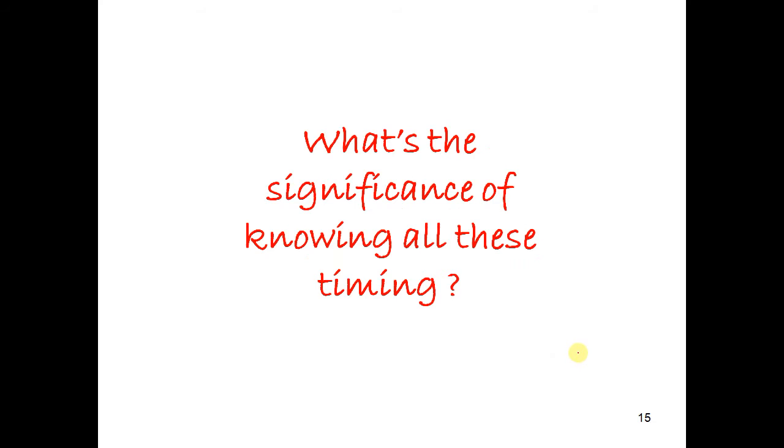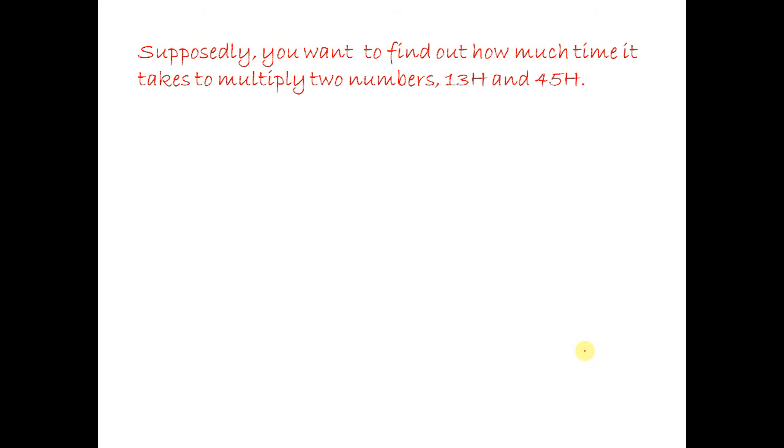What is the significance of knowing all these timings? Supposedly, you want to find out how much time it takes to multiply two numbers. The instruction has three lines of codes as shown.